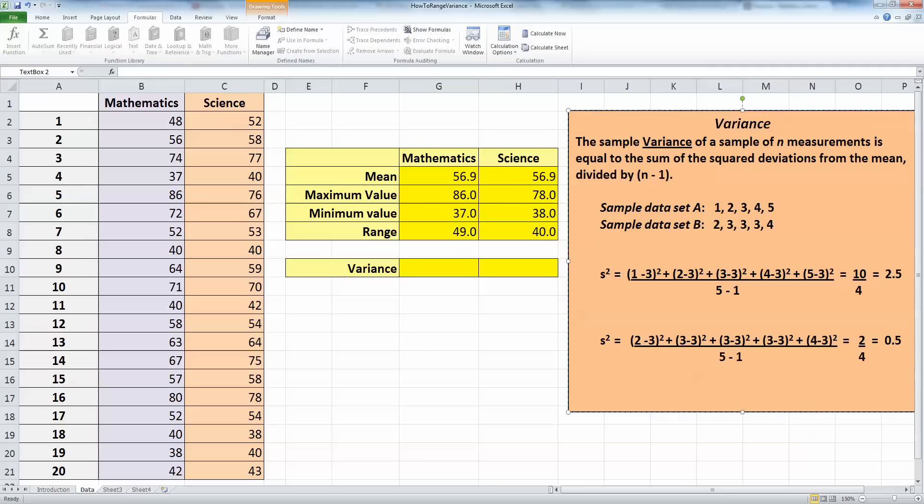Now we represent variance by this symbol here, s squared. So s stands for sigma, so s squared is what variance is. s, by the way, would be the standard deviation.